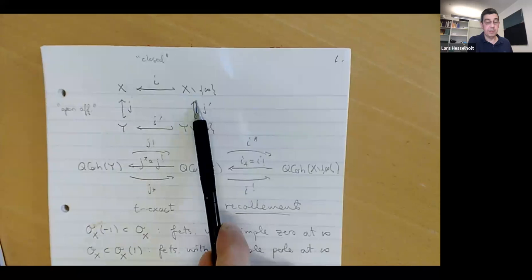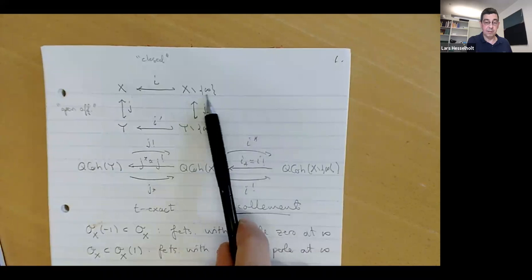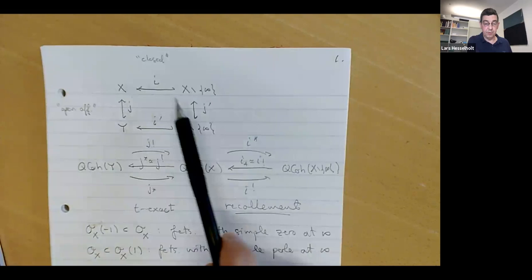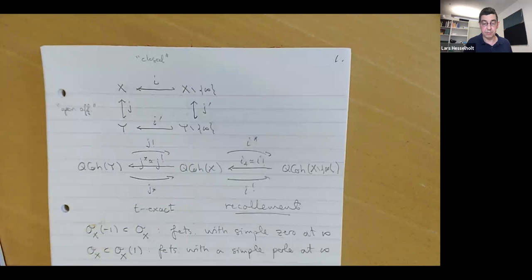And then this thing here, which is actually open, now behaves as if it's closed, because we can think that there's not much difference between this and X, but not Y instead. And here is this punctured formal completion.